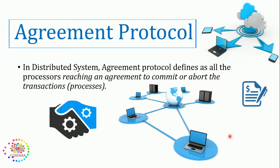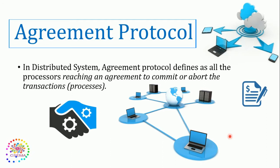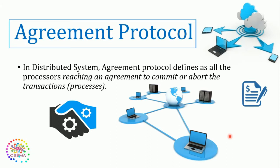So what is the Agreement Protocol? If we segregate these two words — Agreement and Protocol. Agreement is the term in which two or more parties agree to reach a common goal. And the second one is Protocol. Protocol is basically a set of rules. So if you combine both of these words, the Agreement Protocol is the rules where two or more parties are mutually agreed on a common goal to achieve something.